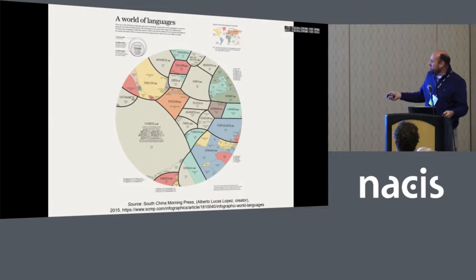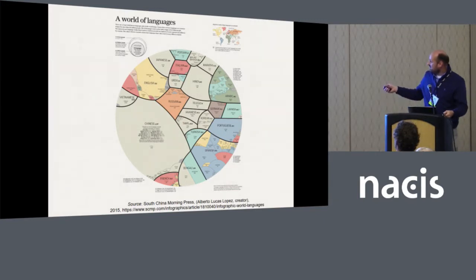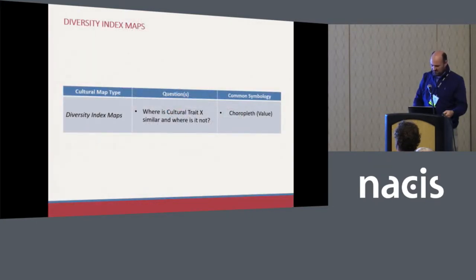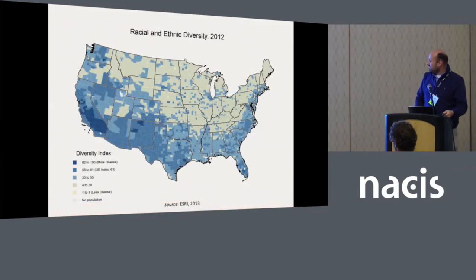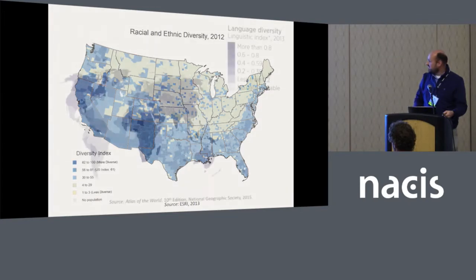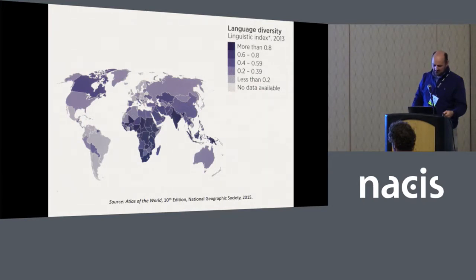This infographic shows the size of languages relative to a circle, with color coding to the different parts of the world where those languages are spoken — here's Mandarin Chinese, here's English, coding up to the region on the map. Diversity index maps are efficient in the sense that they create a single diversity index — taking many different languages and producing one index value, where a low value means not much diversity and a high value means a lot. One example from Esri is the racial and ethnic diversity layer, where darker blue areas are more ethnically diverse and lighter areas less so. These are done for ethnicity and also for language, as shown in another example from National Geographic.